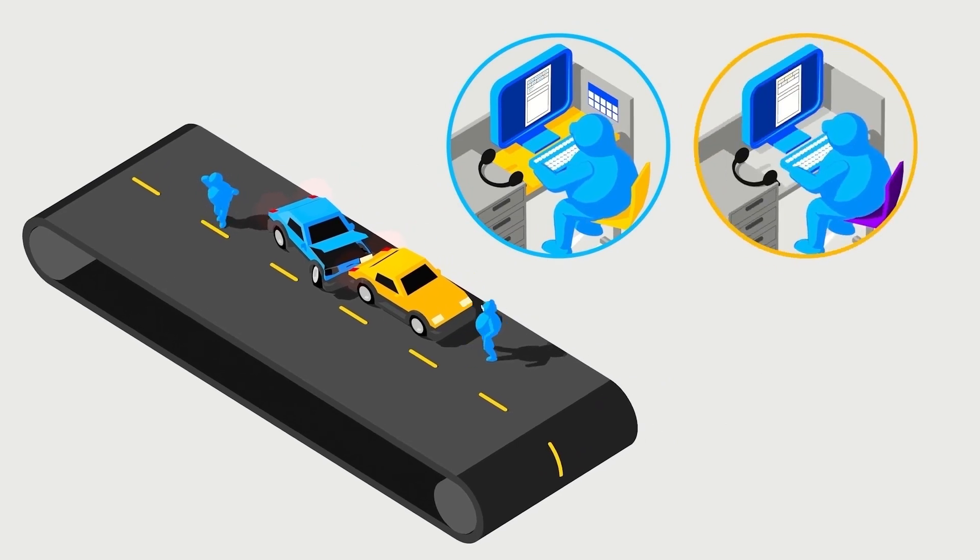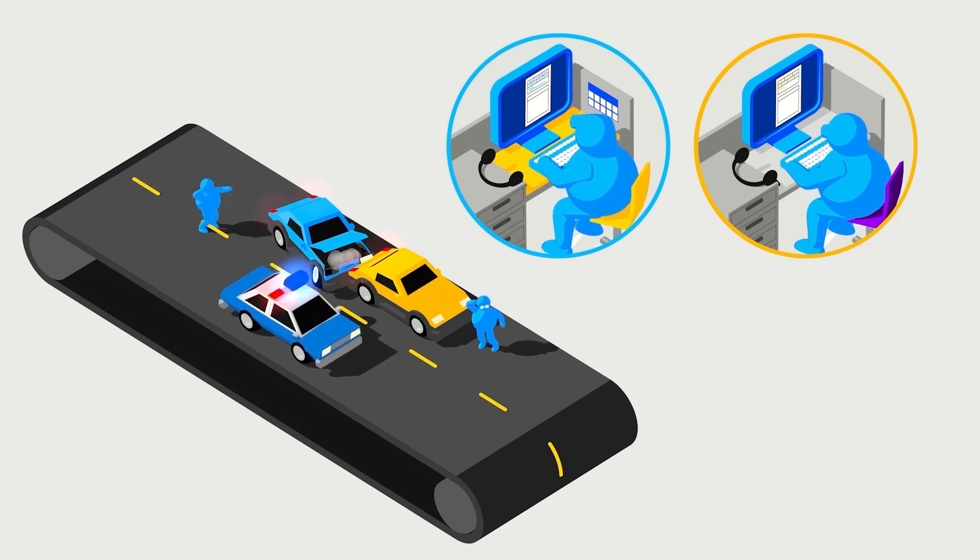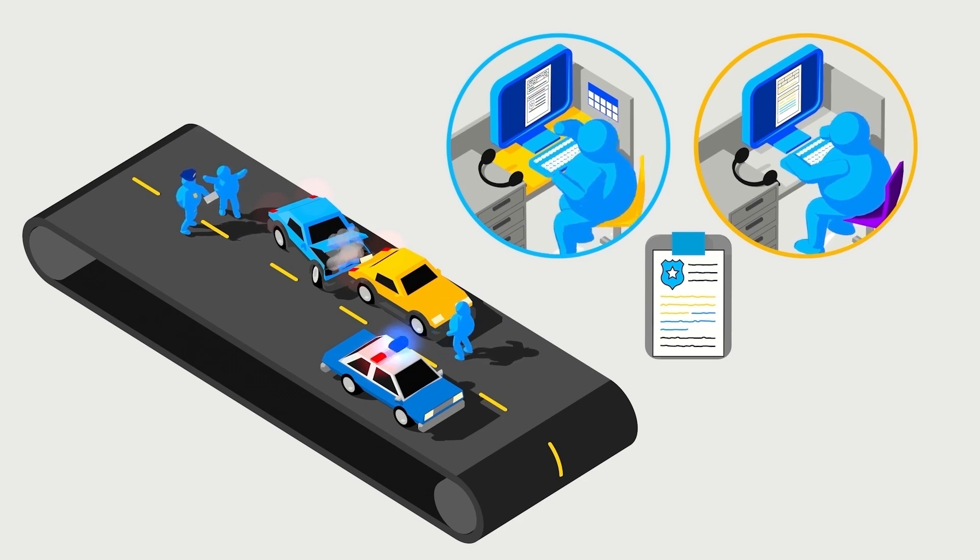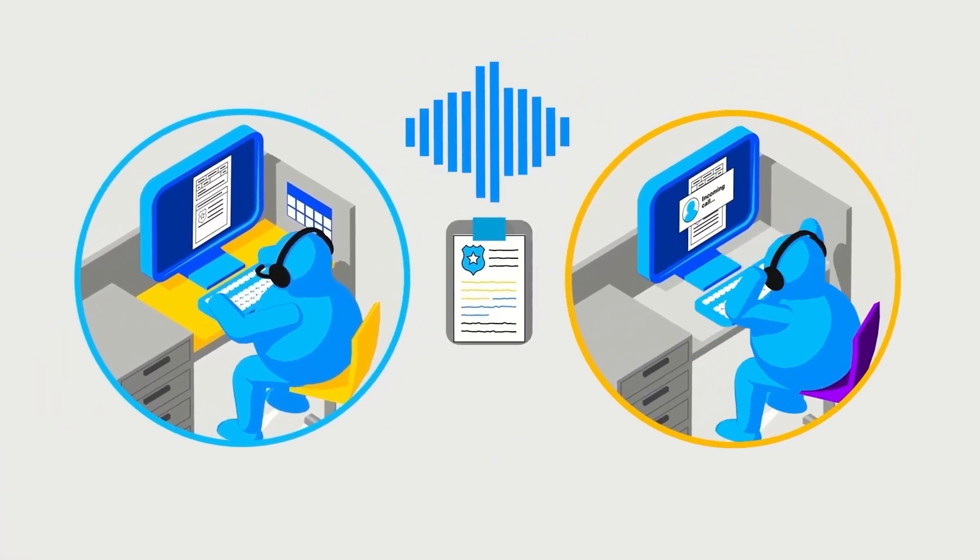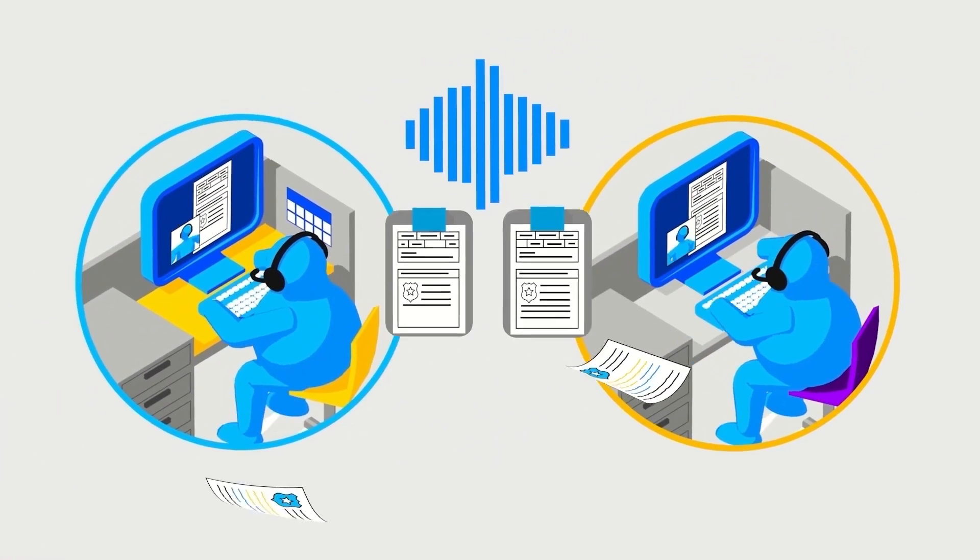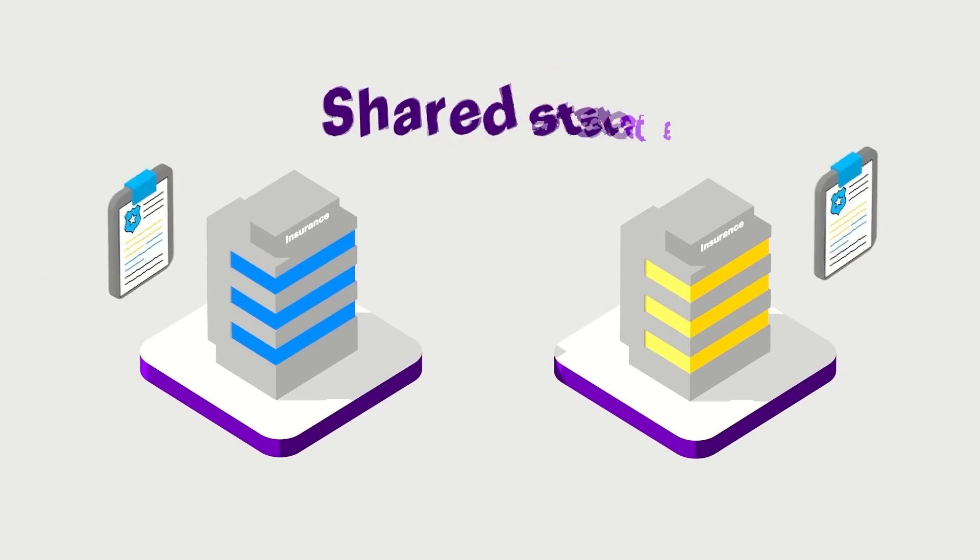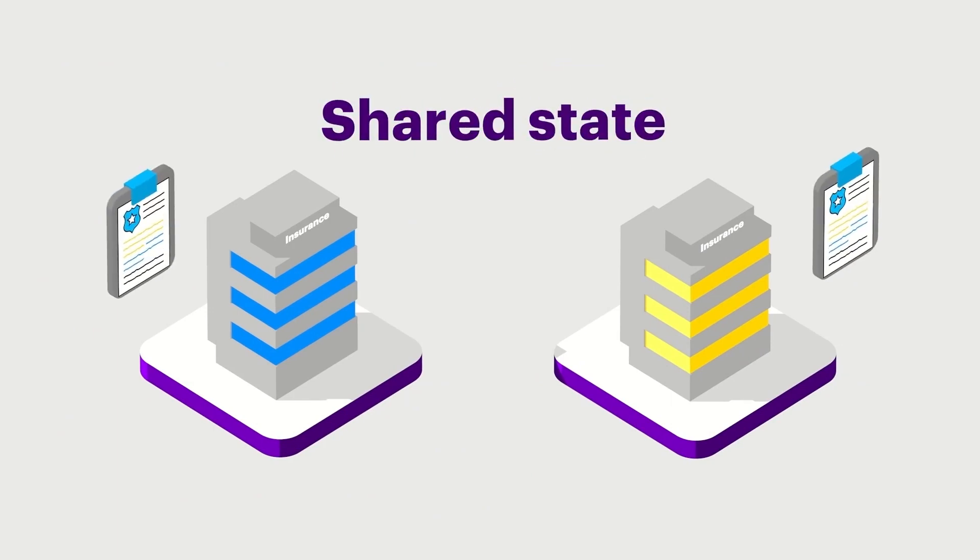Each insurance company will document the accident, known as first notice of loss, and collect information such as the police report to complete the claim process. The result is each insurance company has a different description of the same traffic accident. This data collection and reconciliation process is redundant, costly, time-consuming, and prone to errors.